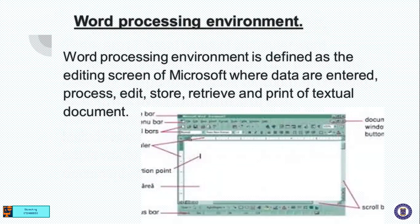The word processing environment is defined as the editing screen of Microsoft Word where data are entered, processed, edited, stored, retrieved, and printed as textual documents. This diagram on my right is the word processing environment. In this environment, data are entered, processed, edited, stored, retrieved, and printed. This environment is where you can enter data, type, edit, process, store, and also retrieve.